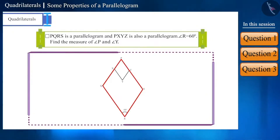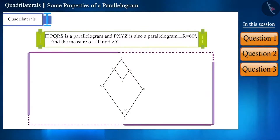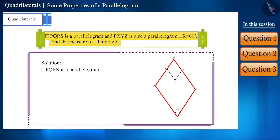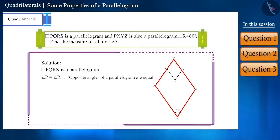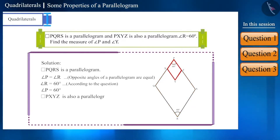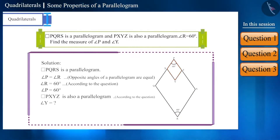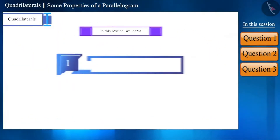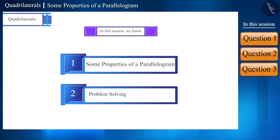Quadrilateral PQRS is a parallelogram and quadrilateral PXYZ is also a parallelogram. The measure of angle R is given as 60 degrees. Find the measure of angle P and angle Y. Since PQRS is a parallelogram and opposite angles are equal, angle P equals angle R, which is 60 degrees. Since PXYZ is also a parallelogram, find the measure of angle Y yourself.